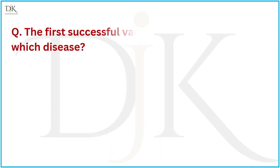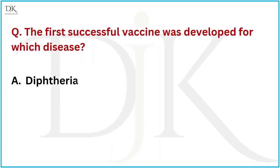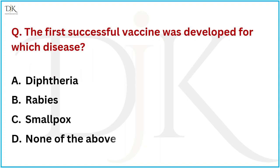The first successful vaccine was developed for which disease? The right answer is Smallpox.